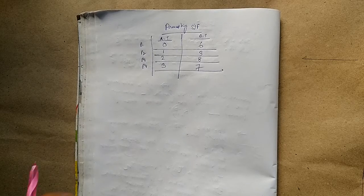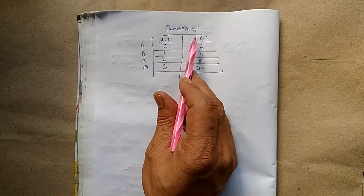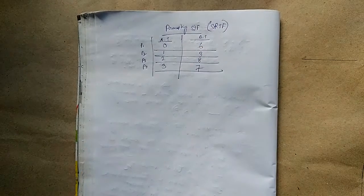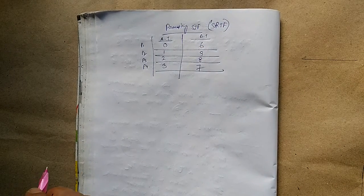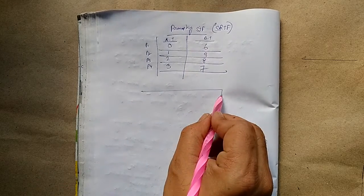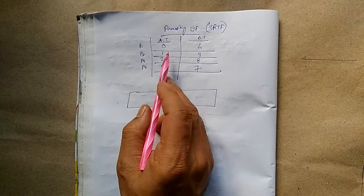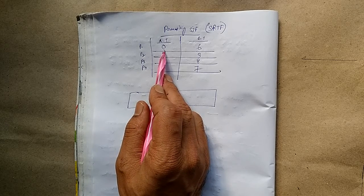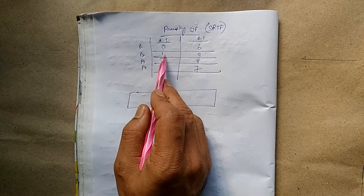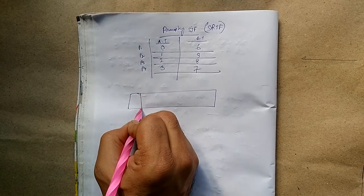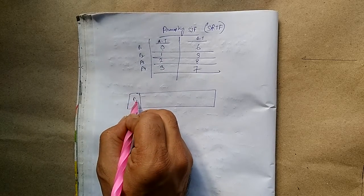We will see the Preemptive SJF, or SRTF — Shortest Remaining Time First. First, we will draw the Gantt diagram. Process P1 is coming at time 0. No other process is coming at that time, so automatically our selection will be process P1.